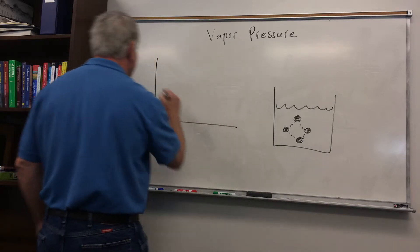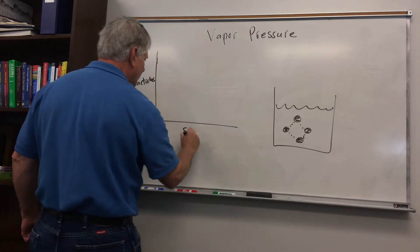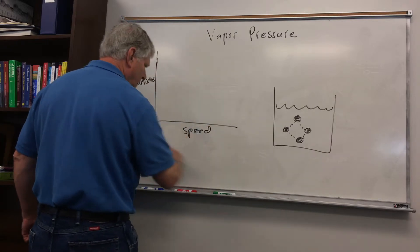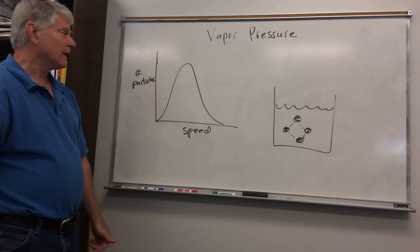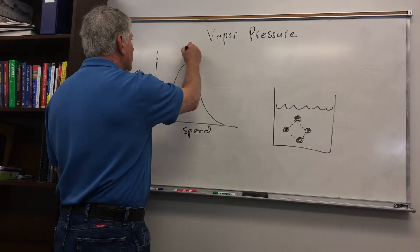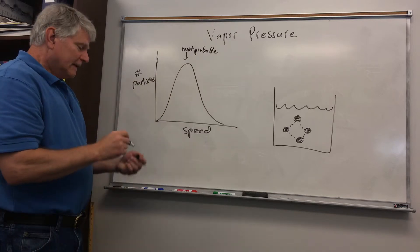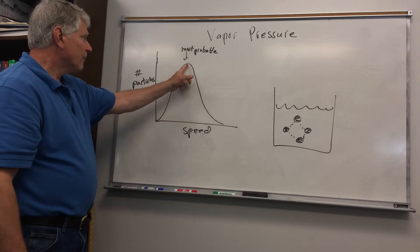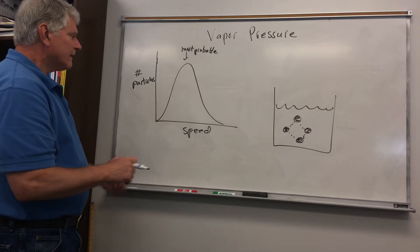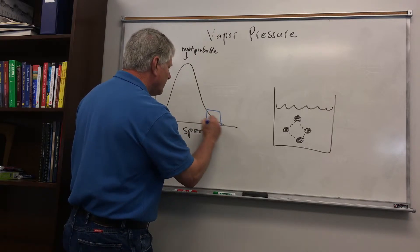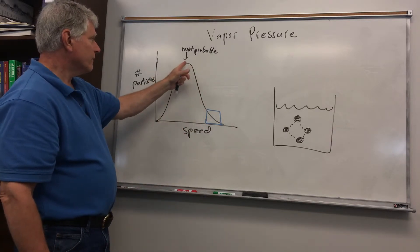If we look at the distribution of speeds of a gas particle, we get a curve that looks like this. This is the most probable speed at the maximum. But there is a distribution of speeds — we have the most probable and we can calculate the average. One thing to notice is that there are a few particles that have speeds much greater than the most probable or the average, which are close to each other.